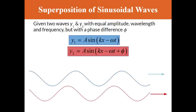We're going to apply the superposition principle to basic sinusoidal waves for transverse waves on strings or linear mediums. Suppose we have two waves that both have the same amplitude, wavelength, and frequency. The only difference is a phase factor phi. For their wave functions, they have the same wave number and same angular frequency — it's just that one of them is shifted by some phase amount.